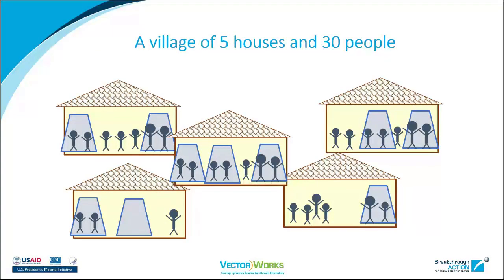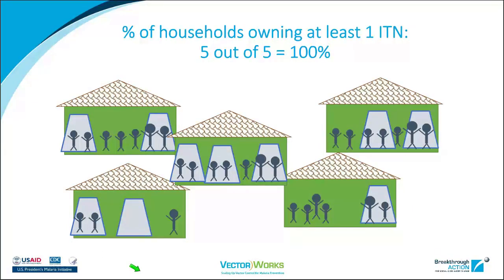To illustrate, here we have a village with five houses and 30 people. There are 10 nets in this village, interspersed throughout the houses. In terms of the first indicator — the percent of households owning at least one ITN — all five houses have at least one ITN. So that's great, but we know there's still not quite enough for everybody. This ownership indicator gives us a basic coverage indicator, but it doesn't tell us the full picture.